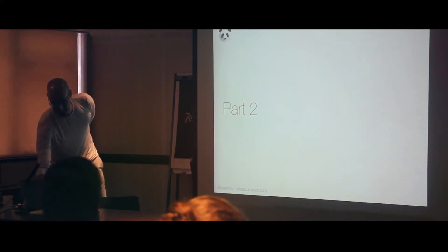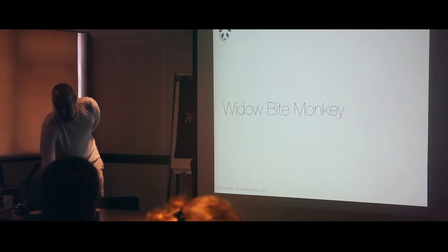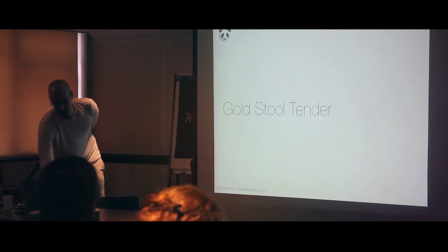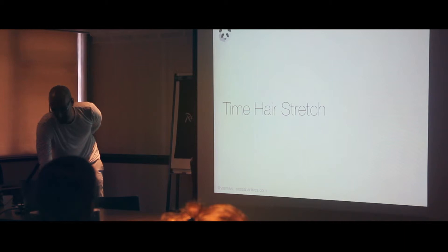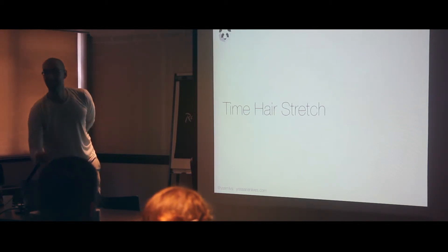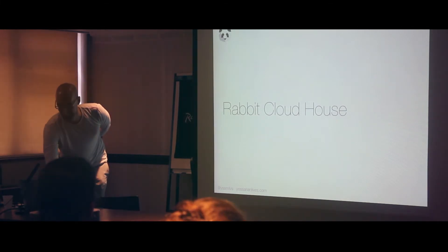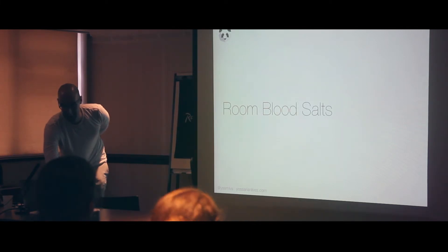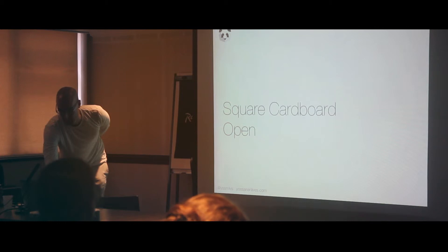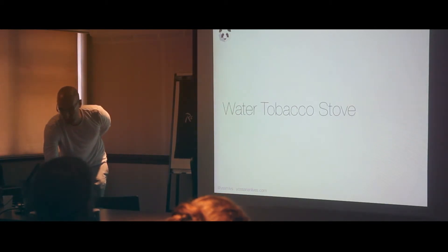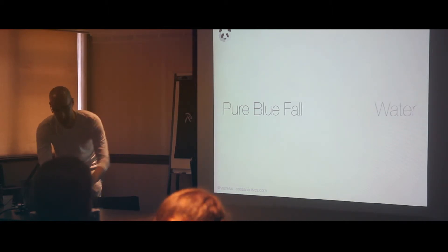I'll read out the three words and then you try to get the connecting word. Skunk, kings, boiled — cabbage. Nice. Widow, bite, spider — black. Gold, stool, tender — bar. Bob, yes, well done. Time, hair, stretch — length. Rabbit, cloud, house — dark. Room, blood, salts — bath. Correct. Salt, deep, foam — sea. Square, cardboard, open — box. Water, tobacco, stove — pipe. Blue, pure, fall — water.